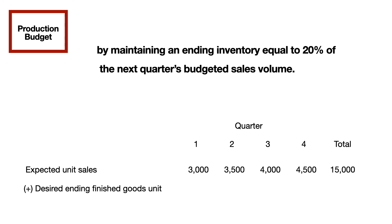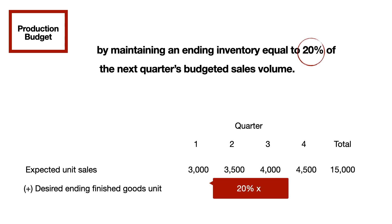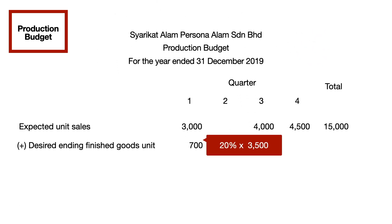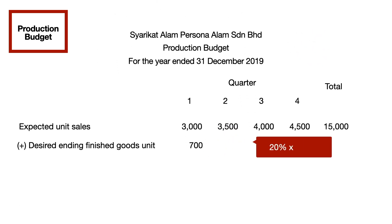Next, you need to calculate the desired ending finished goods units. As stated in the information given, the business needs to maintain 20% of the next quarter's budgeted sales volume as ending goods. You will be multiplying the 20% with the next quarter's expected sales to get these numbers.